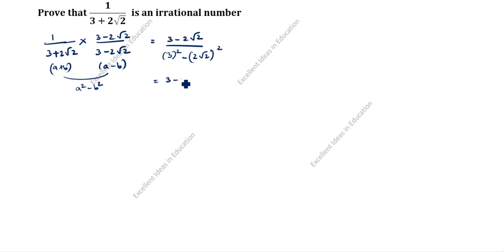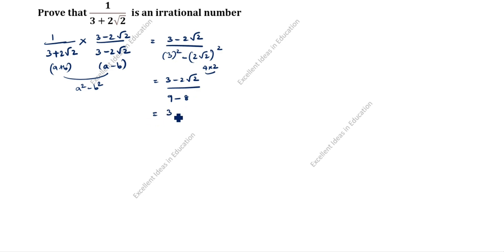This equals 3 minus 2 root 2 divided by 3 squared minus 4 into root 2 squared. So the denominator is 9 minus 4 times 2, which is 9 minus 8 equals 1. The result is 3 minus 2 root 2 divided by 1. Now let us assume that 3 minus 2 root 2 is a rational number.